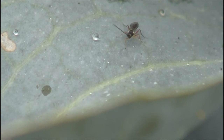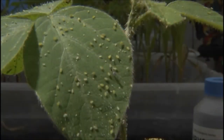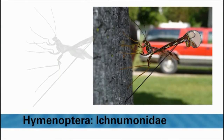Flies are not the only important group of parasitoids. The wasp order Hymenoptera includes many parasitoid species. Parasitoid wasps vary in size from very small wasps less than 1/16th of an inch to species greater than 1 inch in length. Parasitoid wasp females have a modified sting called an ovipositor, which they use to deposit their eggs inside insect pests.